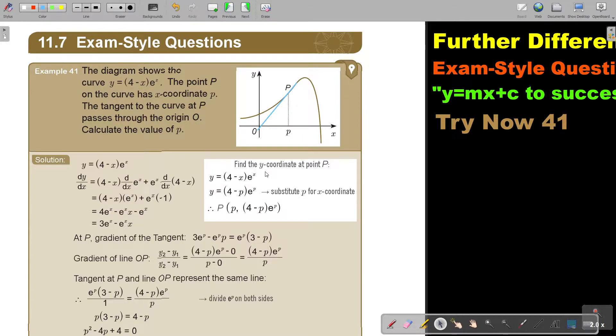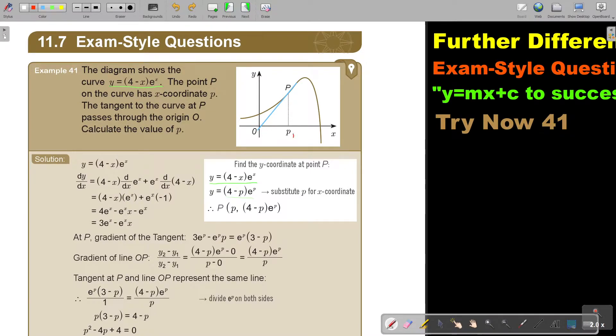Now, very important. Find the y coordinate at p. So I have the x, but how do I find the y? I take the original equation, and I substitute just p in the place of x. And it's just looking like that. So that coordinate point is actually p, 4 minus p, e to the power of p. That is basically that point.